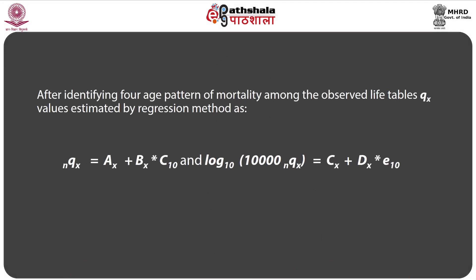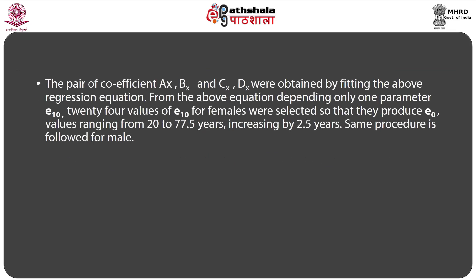After identifying four age patterns of mortality, qx values were estimated by regression method: nQx = Ax + Bx × e10, and log base 10 of (10,000 × nQx) = Cx + Dx × e10. The pairs of coefficients Ax, Bx and Cx, Dx were obtained by fitting the above regression equations. Depending upon one parameter e10, 24 values of e10 for females were selected so as to produce e0 values ranging from 20 to 77.5 years, increasing by 2.5 years. The same procedure was followed for males.